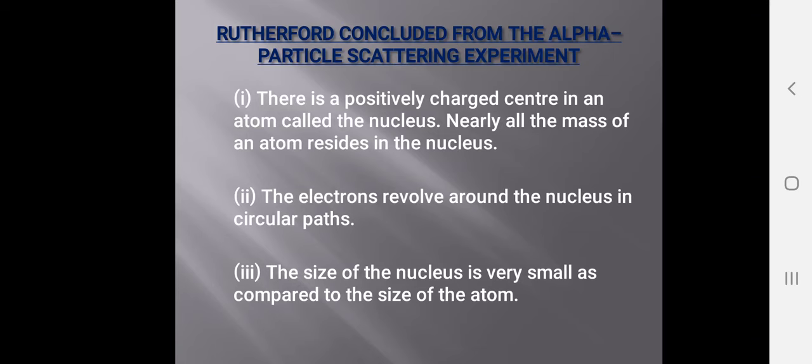After his observations, Rutherford concluded from the alpha particle scattering experiment that there is a positively charged center in an atom called the nucleus. Nearly all the mass of an atom resides in the nucleus. The electrons revolve around the nucleus in a circular path. The size of the nucleus is very small when compared to the size of the atom.